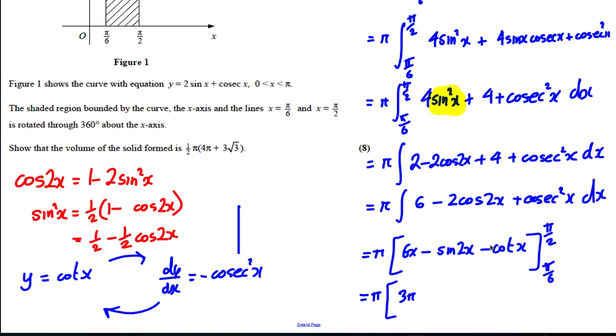And cot of pi by 2, well tan of pi by 2 is infinite, so 1 over infinite, cot of pi by 2 must be 0. So when you put in pi by 2, you just get 3 pi.